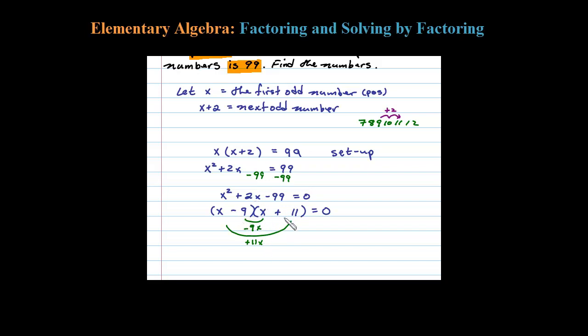Let's check the end term. Negative 9 times positive 11 is negative 99. Okay, so that's factored correctly, it looks good. Let's go ahead and erase these lines there, it's not part of the solution. Okay, so once you get it factored correctly, you then set each factor equal to 0. So x minus 9 equals 0, or x plus 11 equals 0.